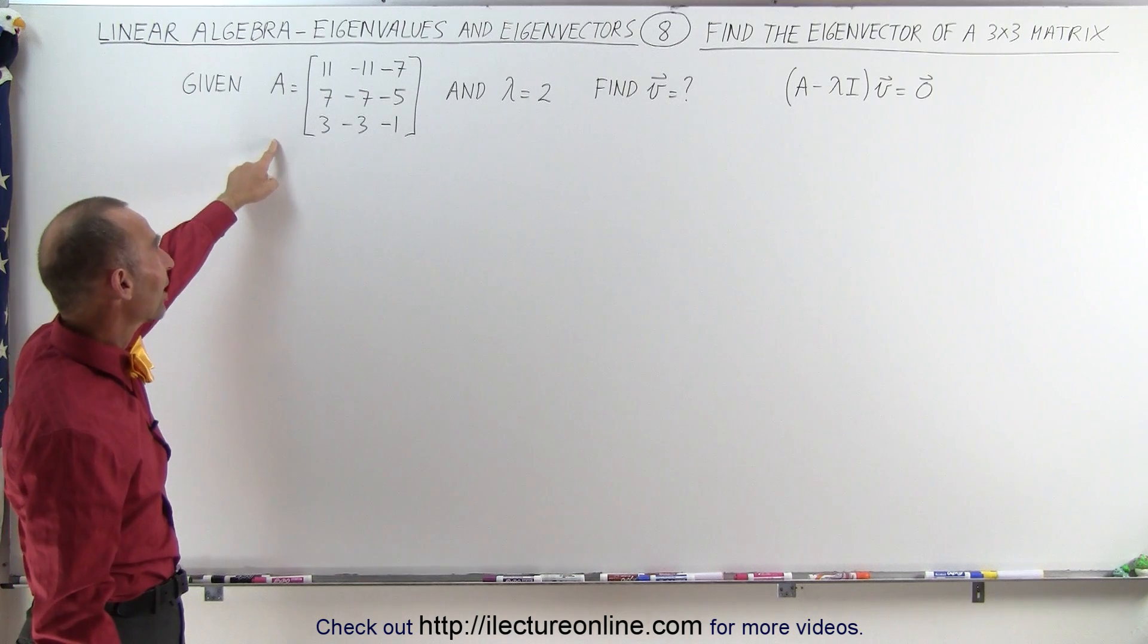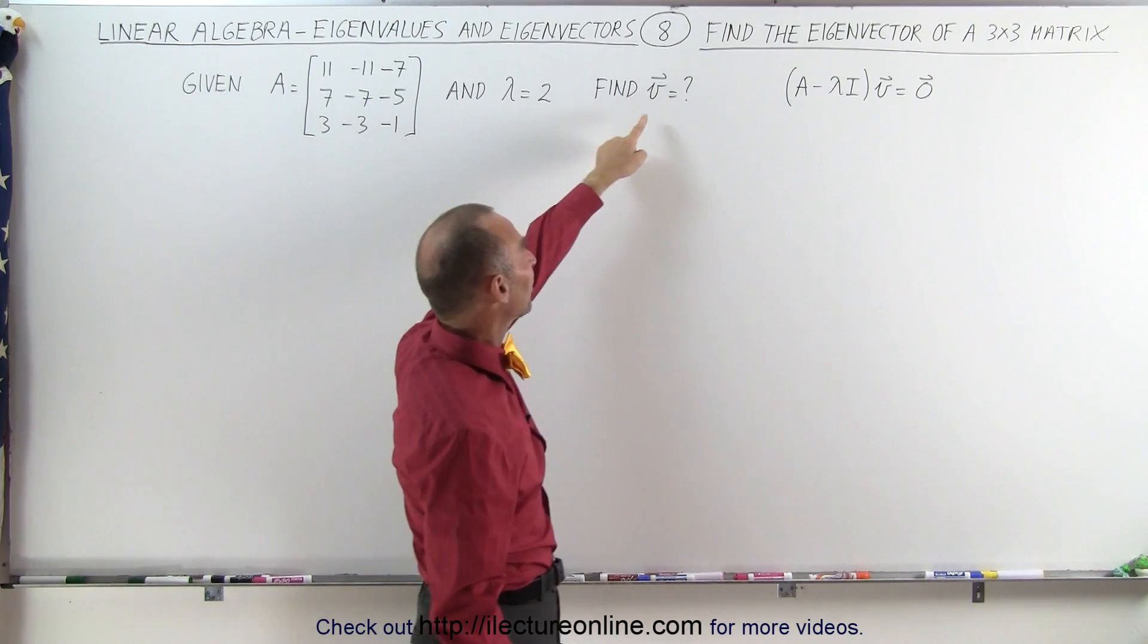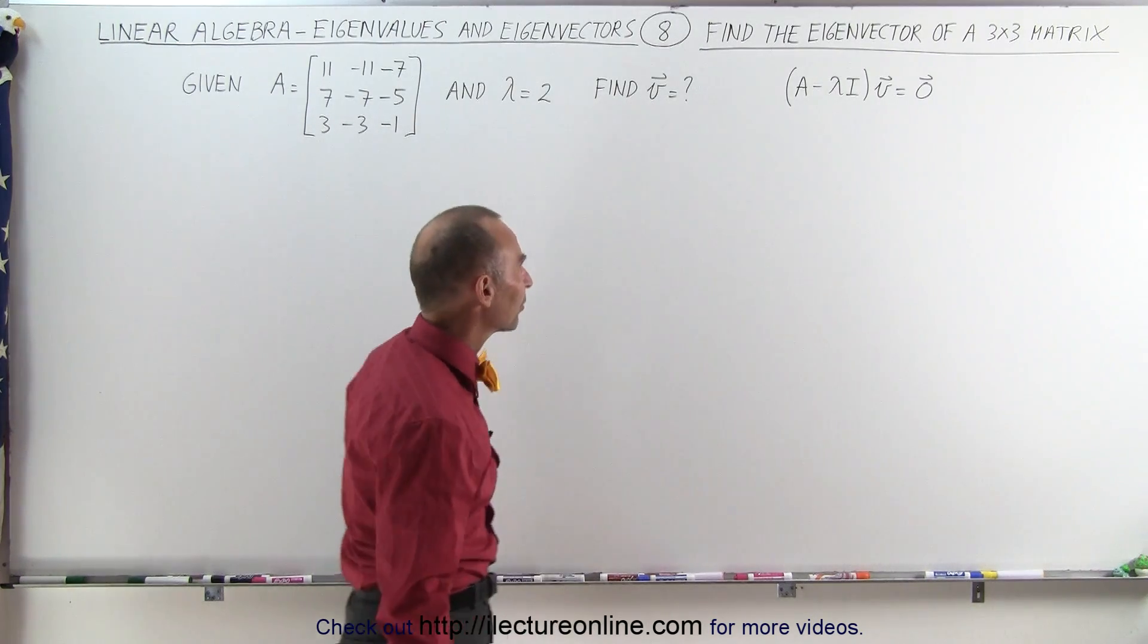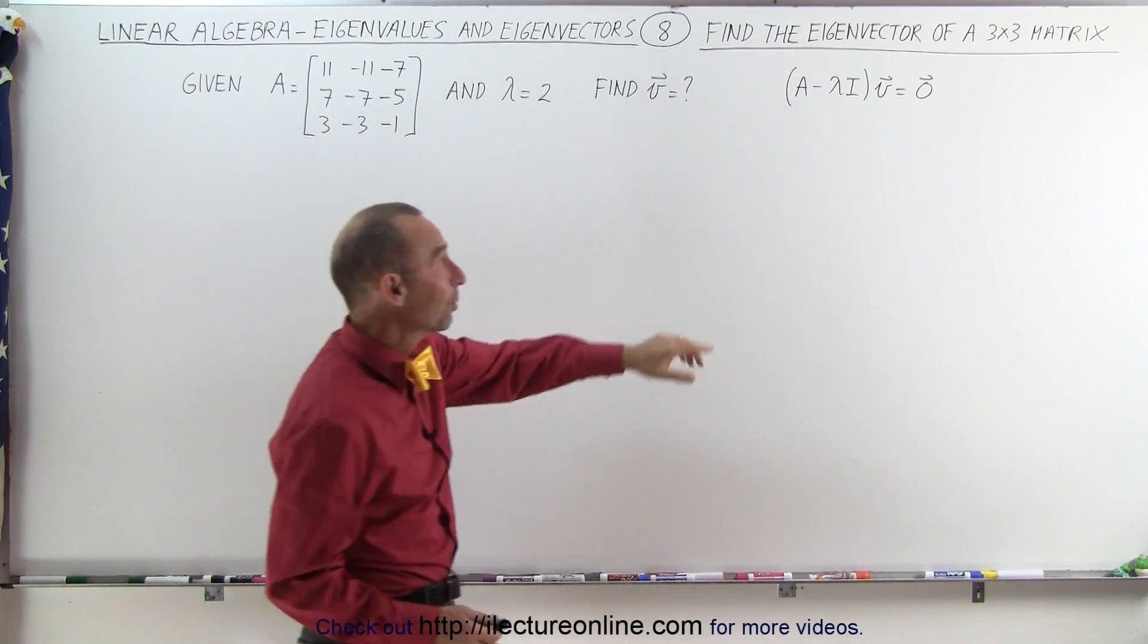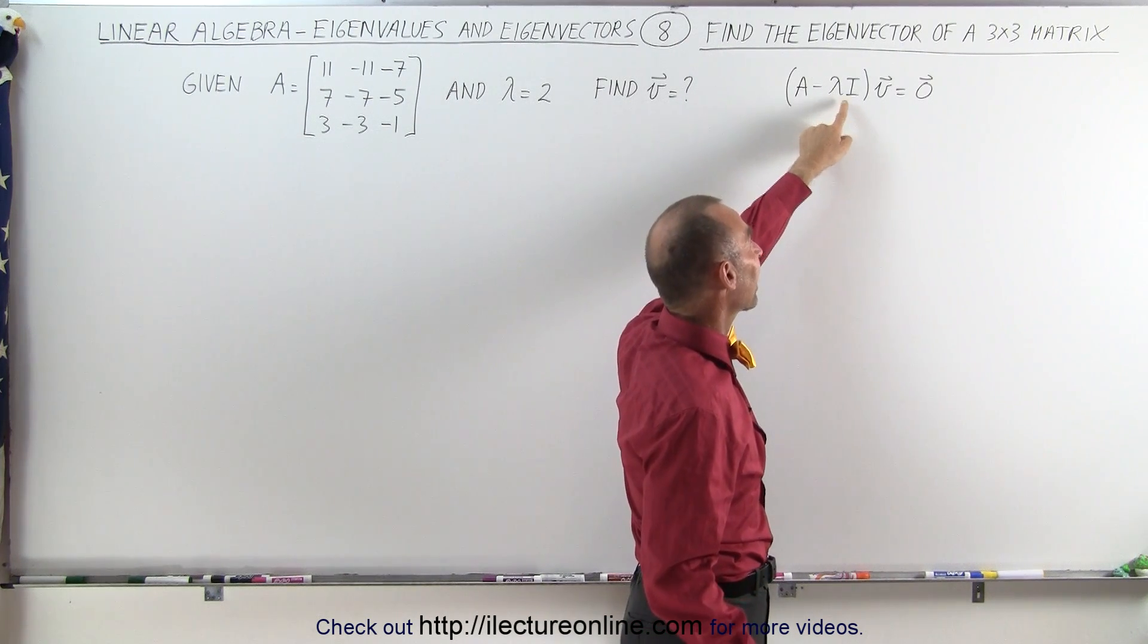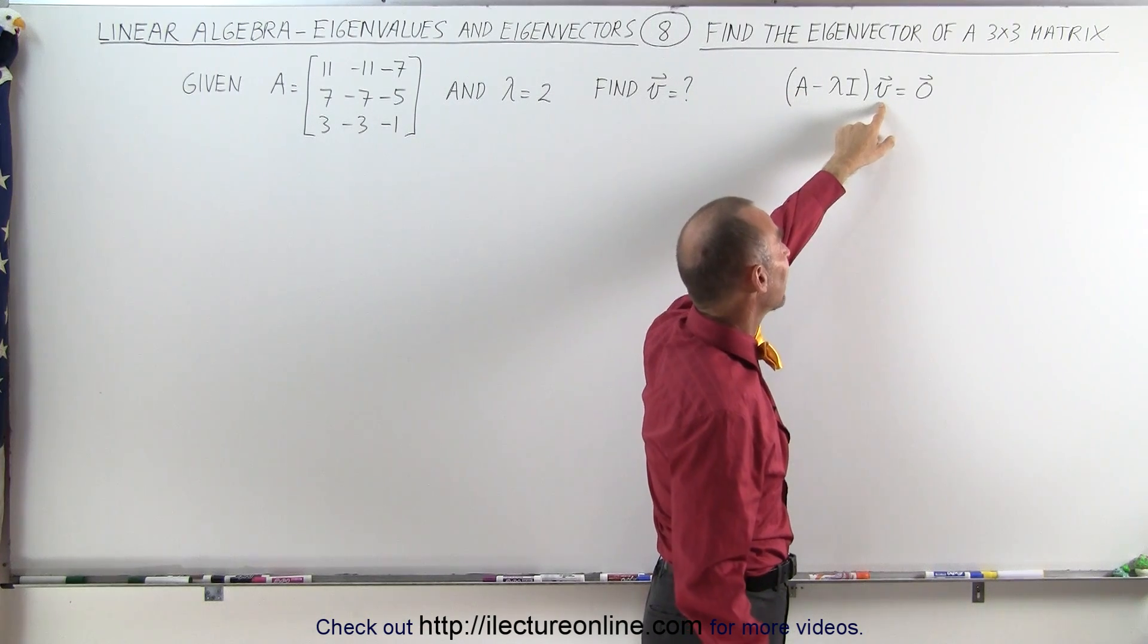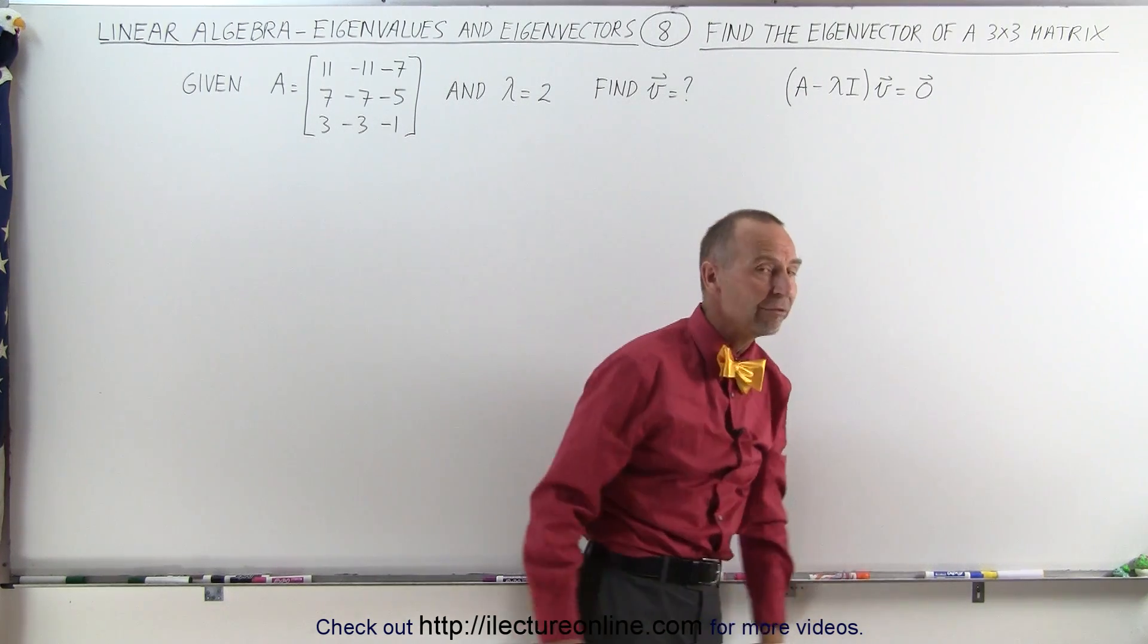We start with the matrix A which is a 3 by 3 matrix, we have an eigenvalue and we need to find the associated eigenvector. We use the same principles before that we take the matrix minus the eigenvalue multiplied times the identity matrix and the whole thing multiplied times the eigenvector should give us the null vector.